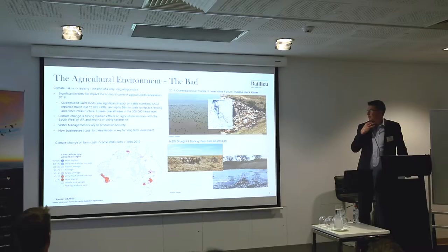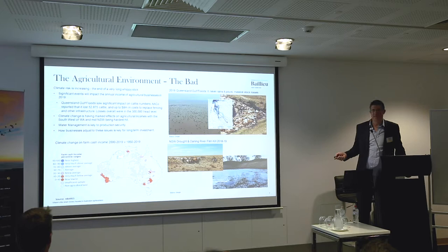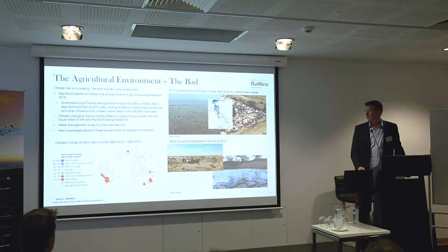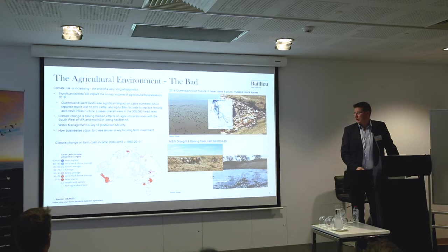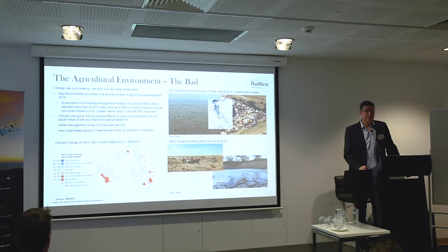Climate risk does appear to be increasing. The floods in Queensland were quite incredible — potentially 300,000 head of cattle were lost. The New South Wales drought and fish kills made the news recently. But what really hasn't made the news is the impact of climate change on farm cash incomes. A survey from 1950 to 2019 shows that from 2000 onwards there's been a significant decline in incomes in southwest WA and parts of New South Wales and Victoria. When looking to invest, it's those businesses that can handle water security and climate change that matter.